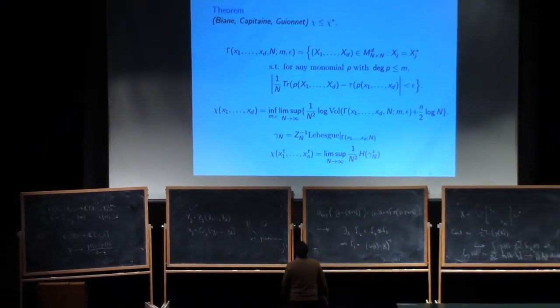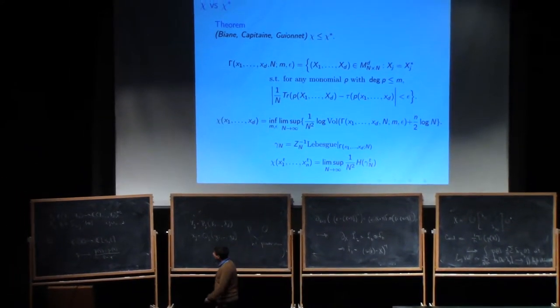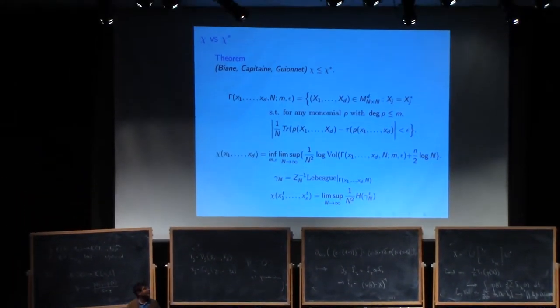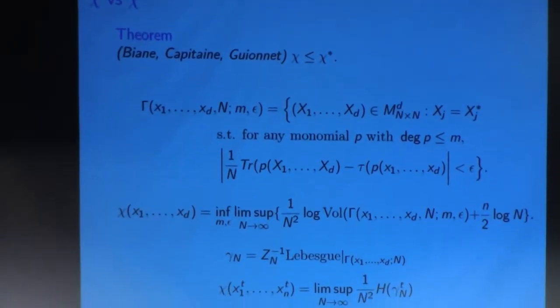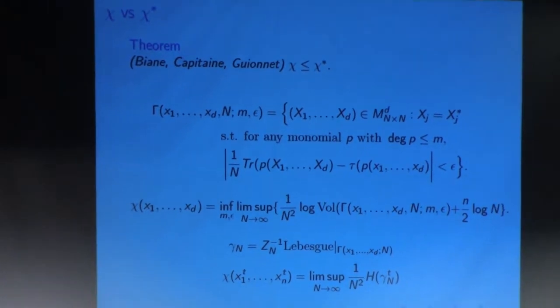Okay, so the big and only result in the subject, really, in this χ versus χ star subject, is this theorem of Biane, Capitaine, and Alice Guionet, which gives an inequality. It says that this χ, χ remembers the thing that is computed with matrices. How many matrices do we have that model a given law, is bounded from above by χ star.